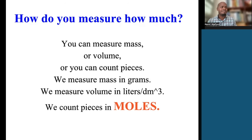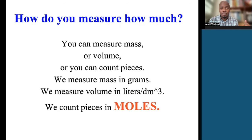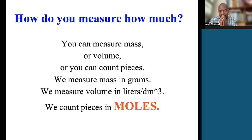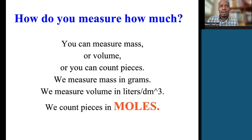In real life, when we're buying things — if we're buying oranges, we'll buy the dozen. In chemistry, when we're counting things, we count in terms of moles. You can think about the mole as a big dozen. So how many pieces does one dozen represent?